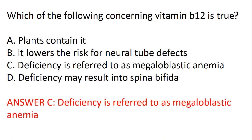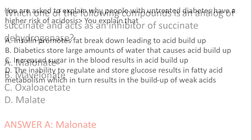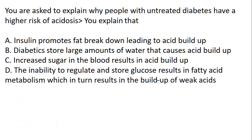The answer for Vitamin B12 is C: deficiency is referred to as megaloblastic anemia. Which one of the following compounds is an analog of succinate and acts as an inhibitor of succinate dehydrogenase? The answer is malonate, which is option A.